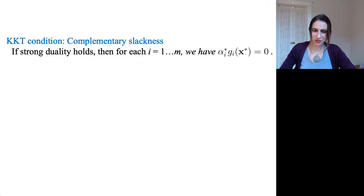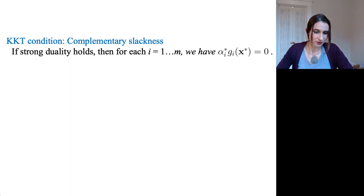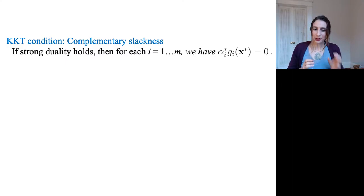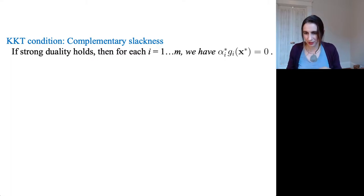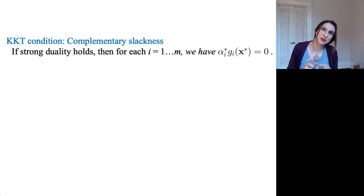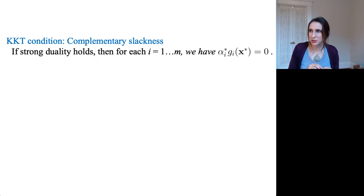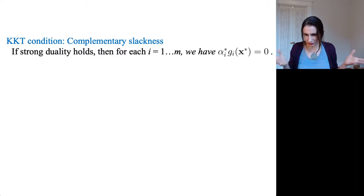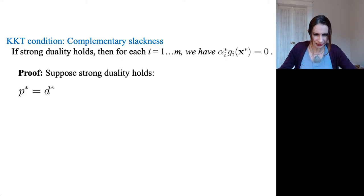The second KKT condition is called complementary slackness, and this one is really cool. If strong duality holds, then for each one of those G constraints, alpha_i* times G_i(x*) equals zero. G_i has to be less than or equal to zero and the alphas have to be greater than or equal to zero. So that means either alpha or G is zero at the solution.